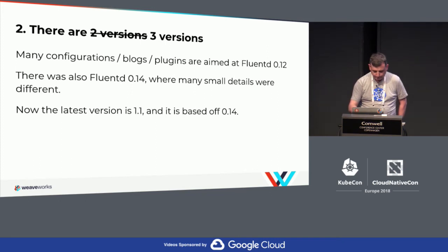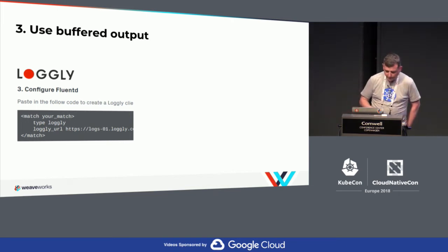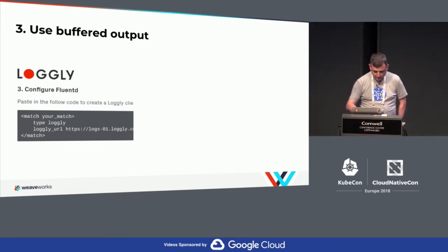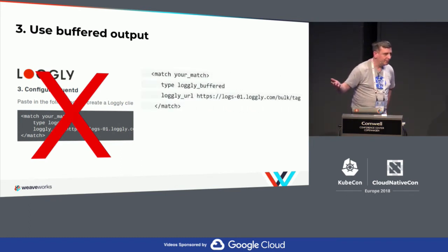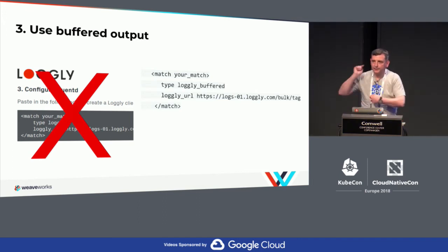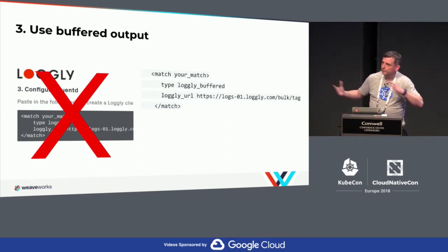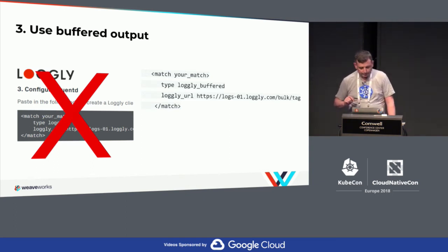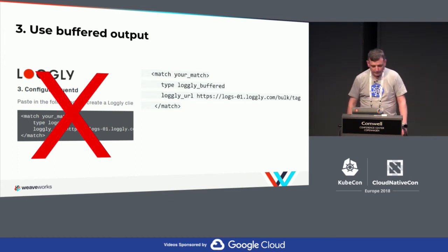Number three: use buffered output. This is what it says on the Logly web page — the product we chose — and they say do it this way. This is wrong. There are two different plug-ins: one called Logly and one called Logly buffered. If you don't use the buffered output, it's like uploading one line at a time over the internet. So don't do that. Use buffering. FluentD has very, very powerful buffering — you can configure it 90 different ways — and it works great. It's just that people put the wrong stuff on the web page.